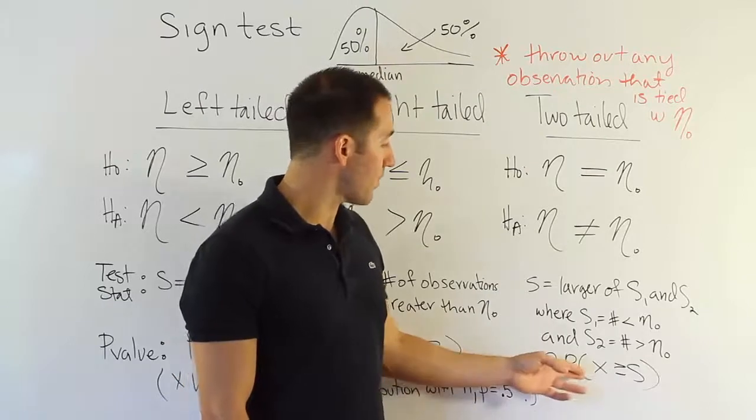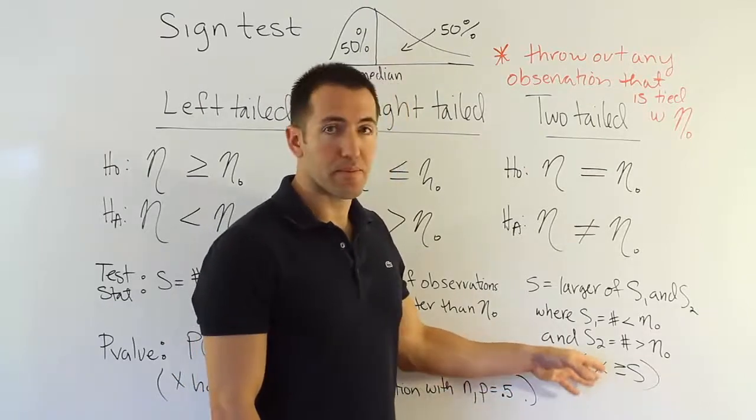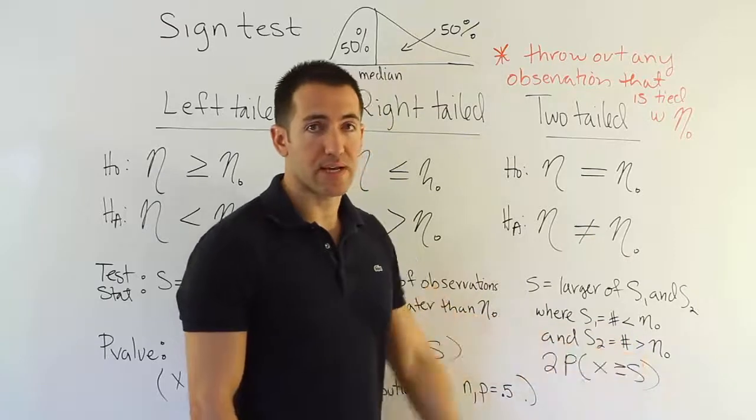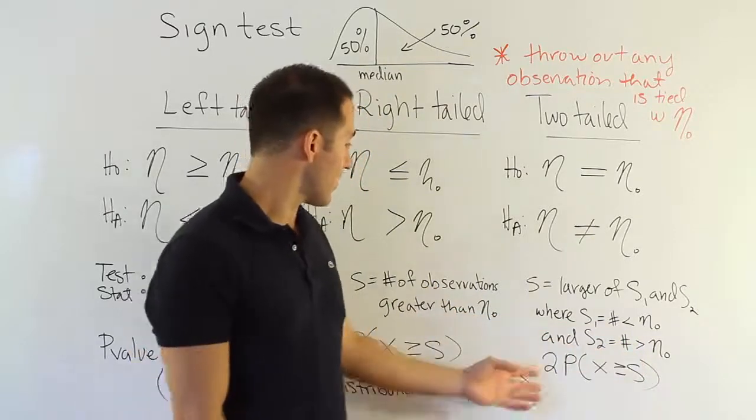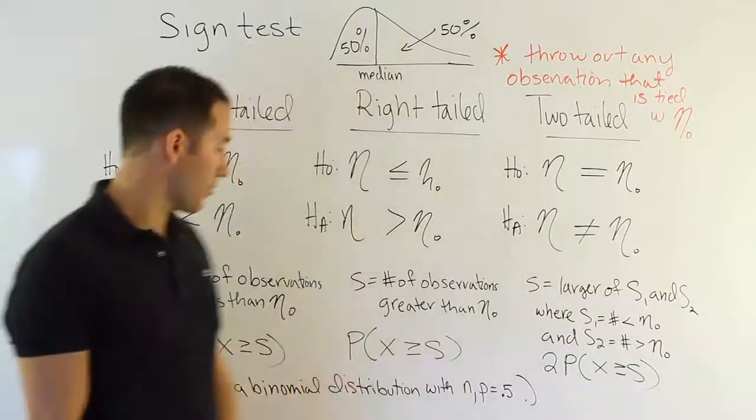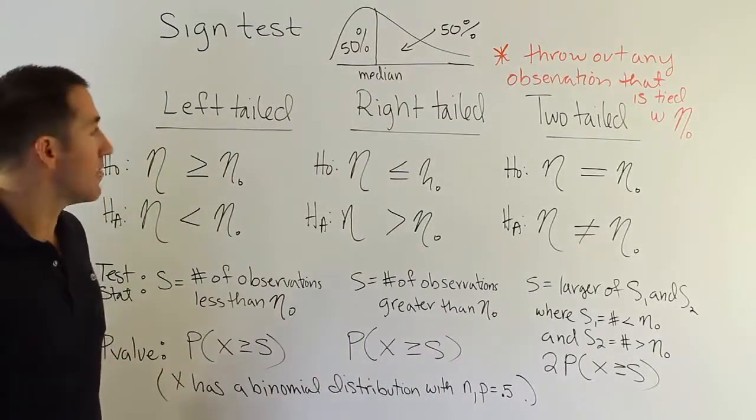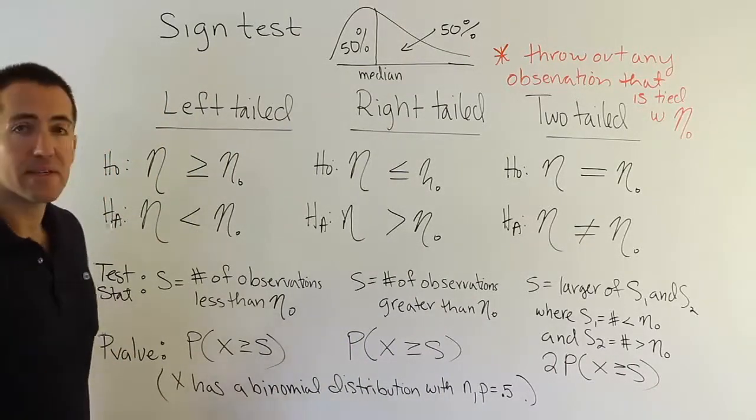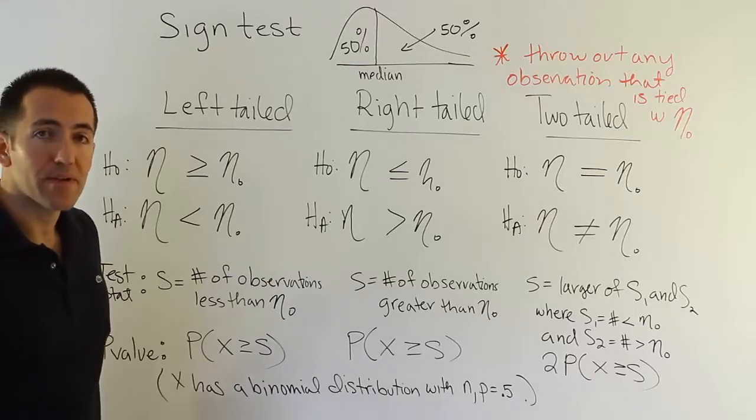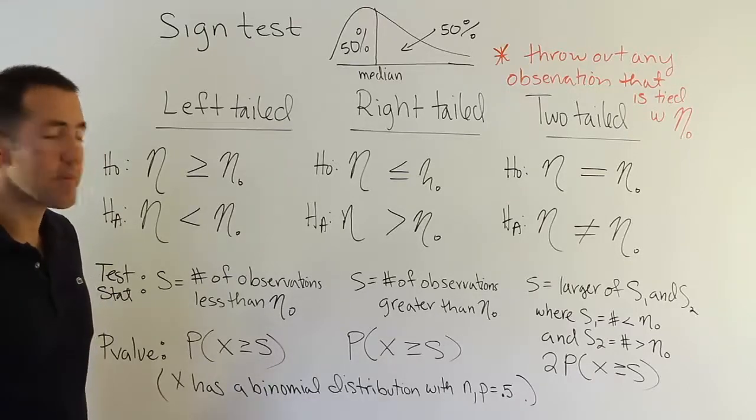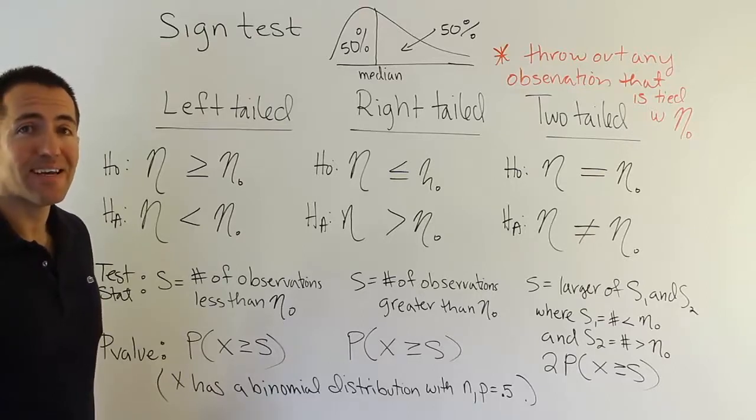We'll do sample problems where you'll be able to see that and make sure you don't commit that error. But, essentially, it's two times the probability that your binomial random variable is greater than or equal to your test stat, and that's it. Now, the binomial table is used in these problems, or you can use software, but either way, with that, you'll be able to calculate a p-value, and you'll be able to make your decision based on the p-value. If you don't remember how to do that, of course, the problem videos will show that, but essentially, you just compare that p-value to your alpha. If it's less than alpha, you reject the null hypothesis.